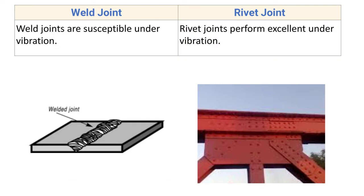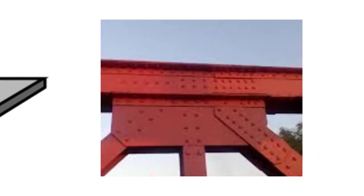Welded joints are susceptible under vibrations — they are prone to defects under vibrations, which is why welded structures are not used for all joinings in bridges. Rivet joint, however, performs excellent under vibrations, and riveted joints are used for bridge construction.